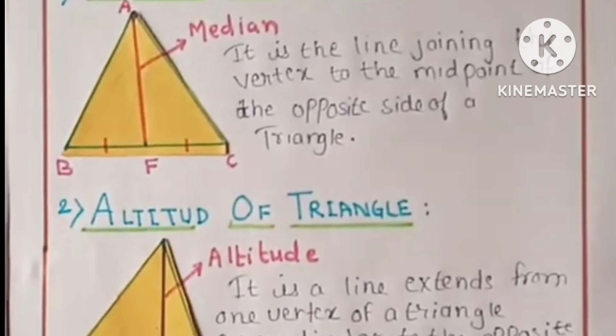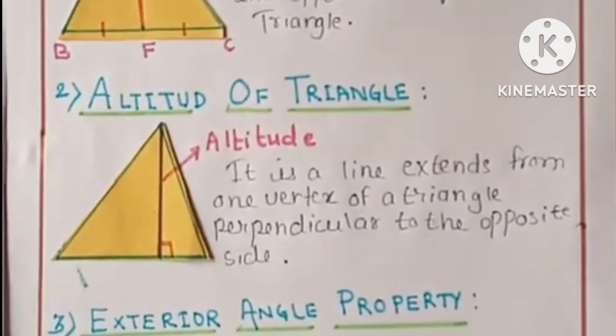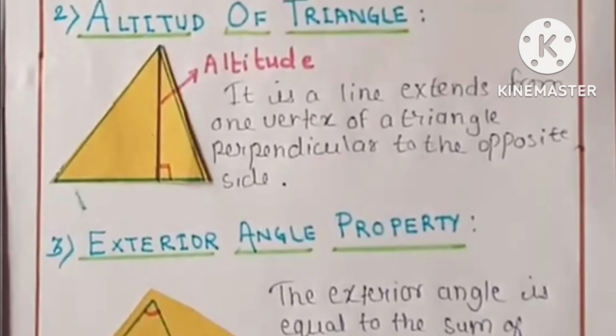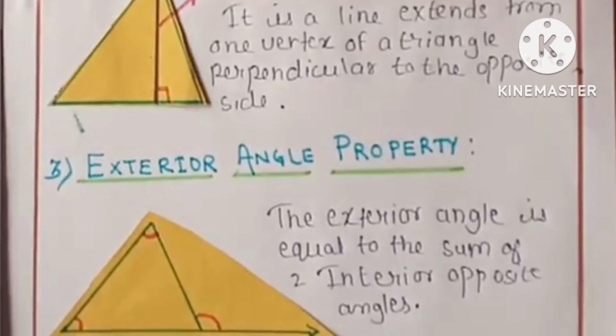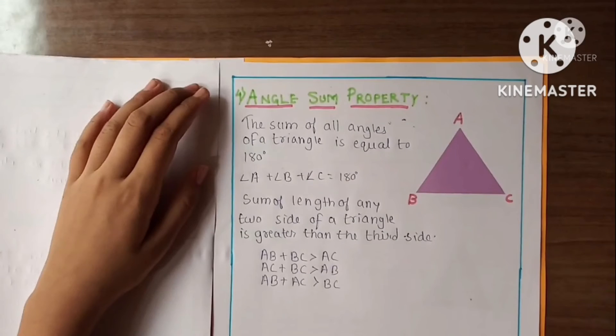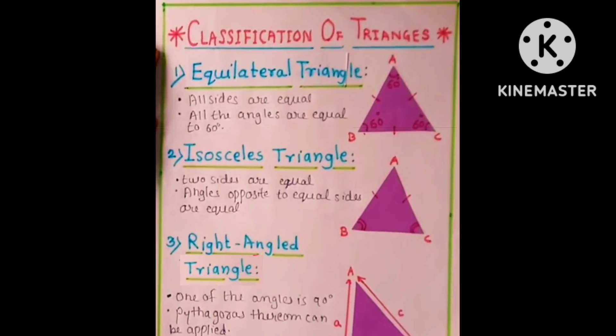On the next page, first one is median of triangle, altitude of triangle, exterior angle property. The fourth one is angle sum property and its information.